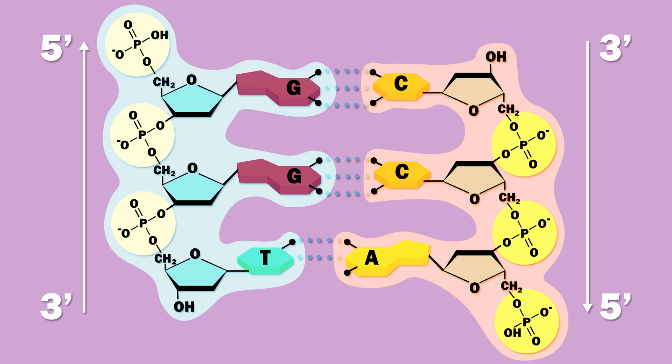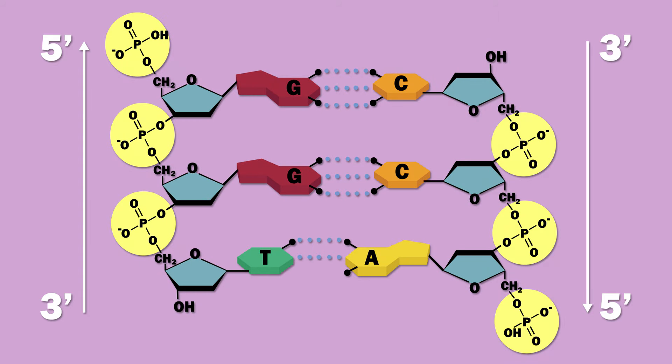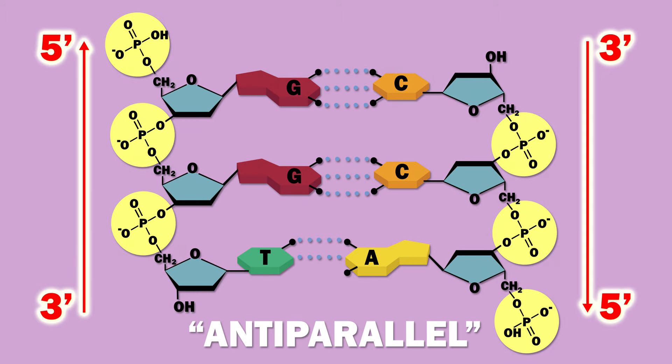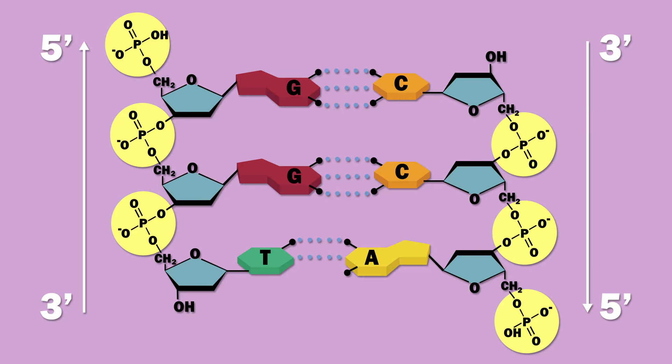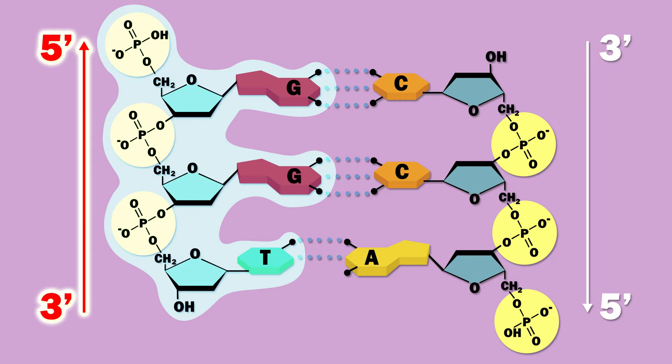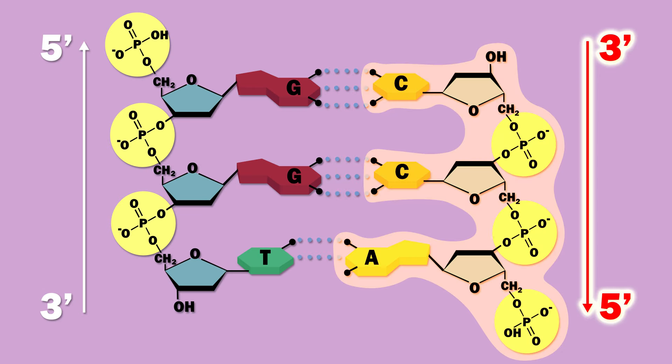The two single strands of DNA composing the DNA double helix are held together via hydrogen bonds, and they run anti-parallel, that is, in opposite directions. One strand is 3' to 5', while the other is 5' to 3'.